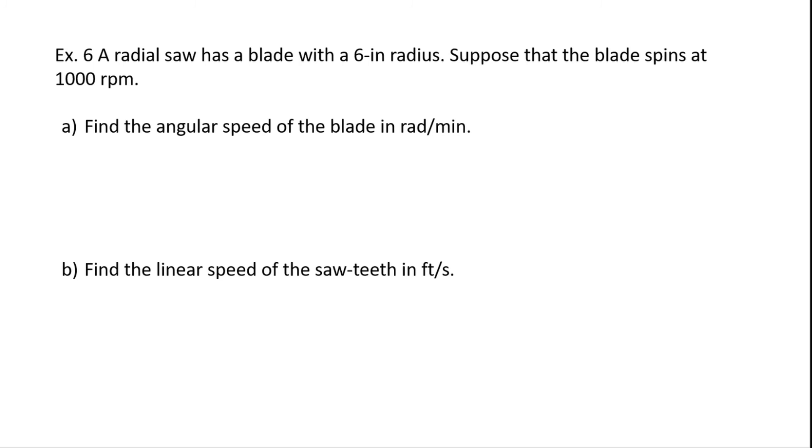A radial saw has a blade with a 6 inch radius. Suppose that the blade spins at a rate of 1000 rpm or revolutions per minute. A, find the angular speed of the blade in radians per minute. The angular speed is found, that's ω, by θ over time. Time is simple, it's one minute. θ we have to mess with a little bit, and so for θ, it does 1000 per minute, and one revolution is 2π. So the θ is actually 2000π. So when we solve for this by replacing values, θ is 2000π radians per one minute, and we would express this as 2000π radians per minute.